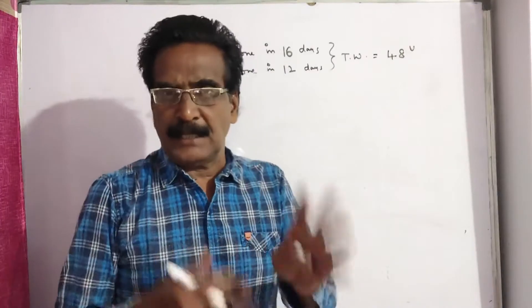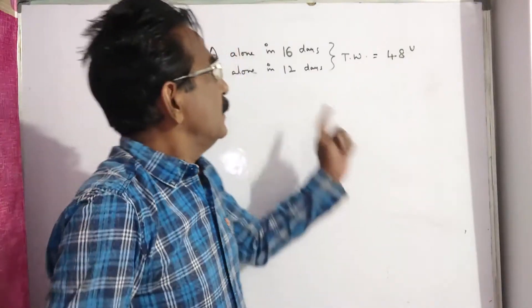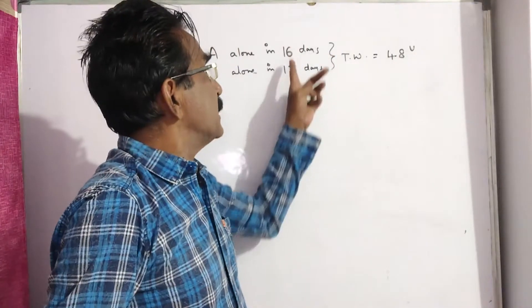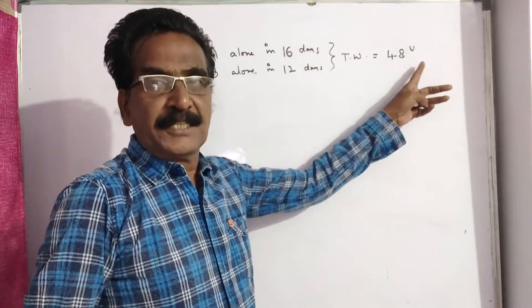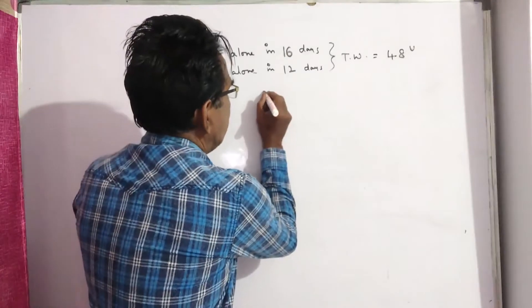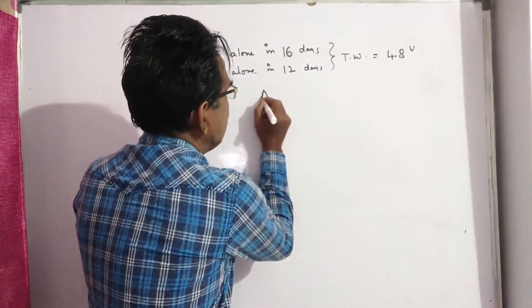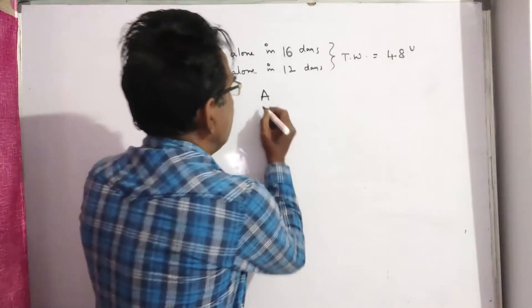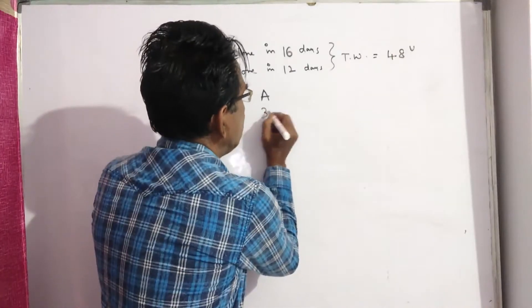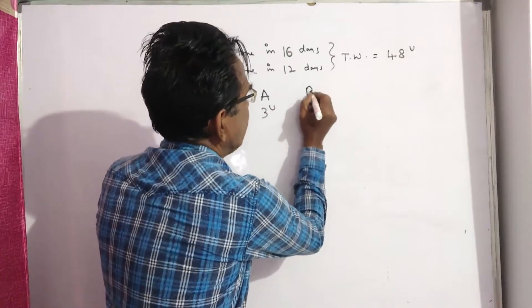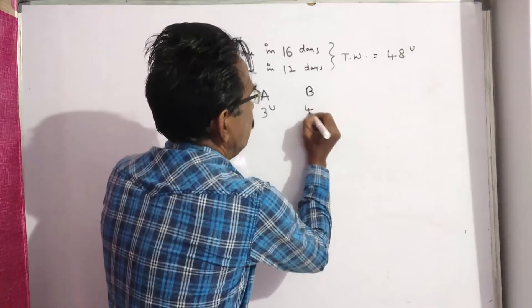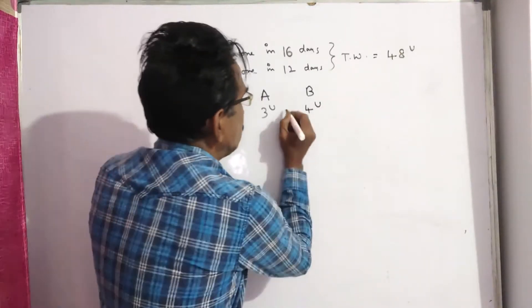Third day again A comes, fourth day B comes, and so on. The total work is the LCM of these two numbers, that is 48 units. Per day, A completes 48 divided by 16 = 3 units per day, whereas B completes 48 divided by 12 = 4 units per day.